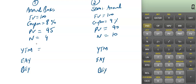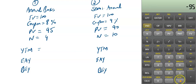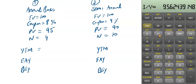Let's start with Bond 1. Using the time value function: FV = 100, PMT = 8 (which is 8% of 100), PV = -95, N = 4. Computing I/Y gives 9.56. So 9.56% is the YTM. Remember, this is a nominal yield. When the compounding basis is annual, your effective annual rate will also be the same — 9.56%.